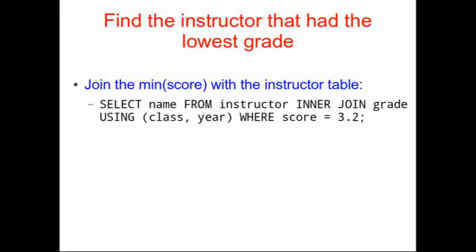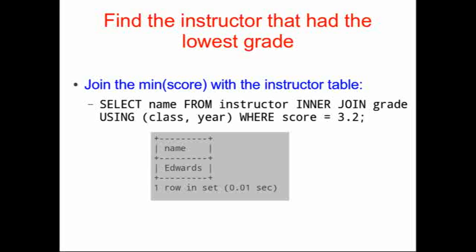We can select the name from instructor and inner join that on our grade table using our common keys, which are class and year. We're going to limit our choice to just those options where score is equal to 3.2. When we run this query, we get a single name returned — the professor that scored the lowest score.